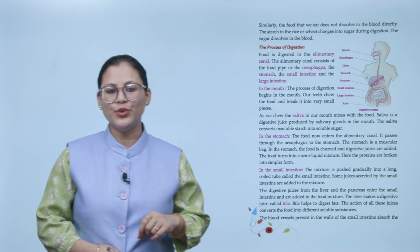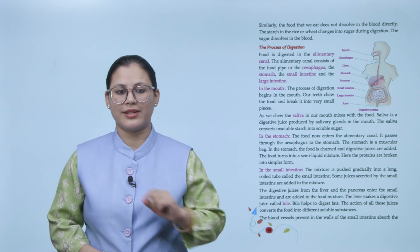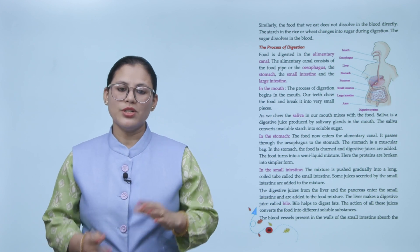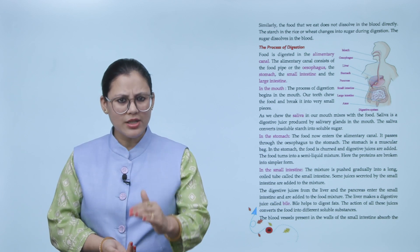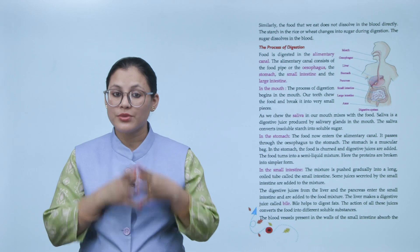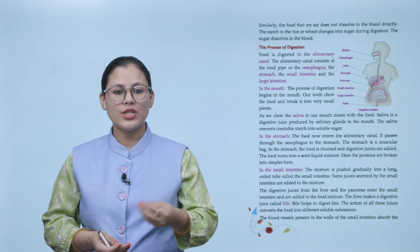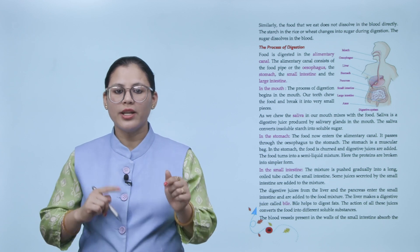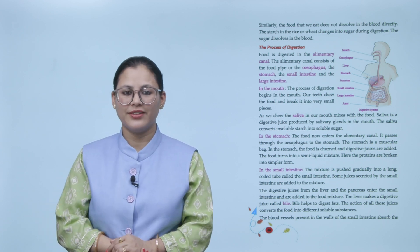Similarly, the food that we eat does not dissolve in the blood directly. The starch in the rice or wheat changes into sugar during digestion. The sugar dissolves in the blood. The food doesn't resolve in the blood directly. The starch in the wheat or rice changes to sugar during digestion. Then the sugar dissolves in the blood.